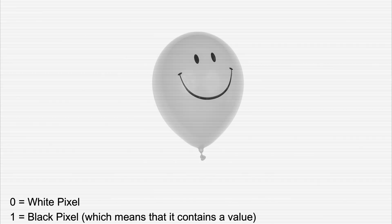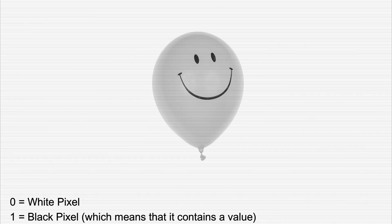Let us say we have a black and white smiley face image. For simplicity, we assign a value of zero for white pixels and one for black pixels, meaning they contain a value. We then train the convolutional neural network to detect smiles by teaching it the pattern of zeros and ones typically associated with a smiley shape. For detecting a smile in a black and white image, the CNN will search for pixels with a value of 1, and that is how it detects the smiley face.